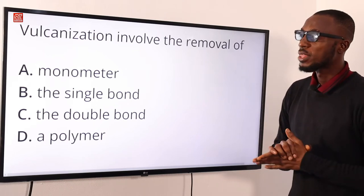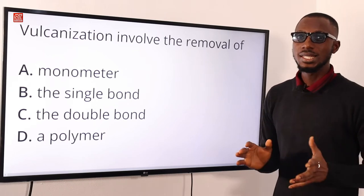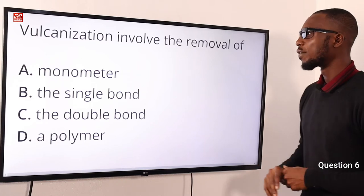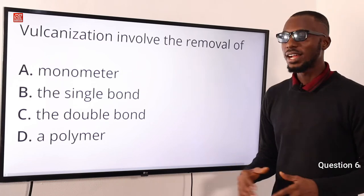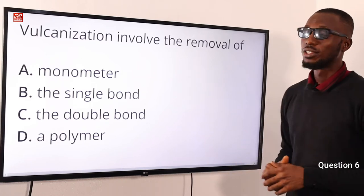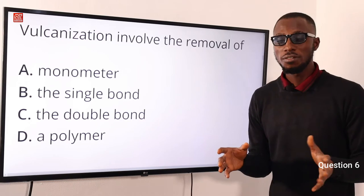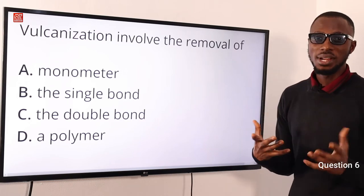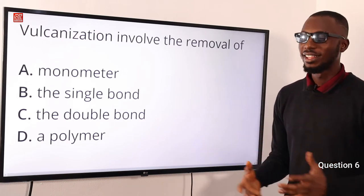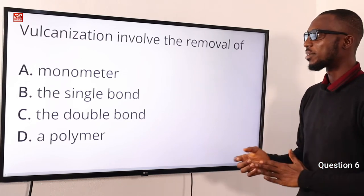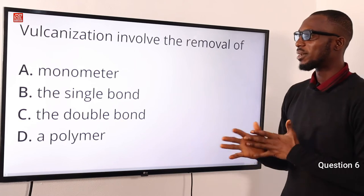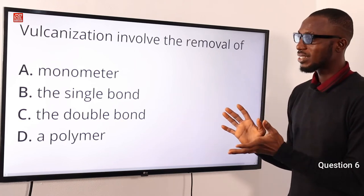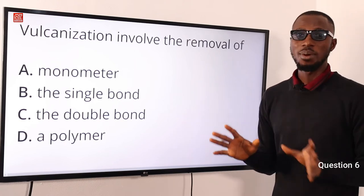Question 6. Vulcanization involves the removal of what? In vulcanization you are introducing sulfur to make a material harder and stronger. In this particular context we are looking at rubber.